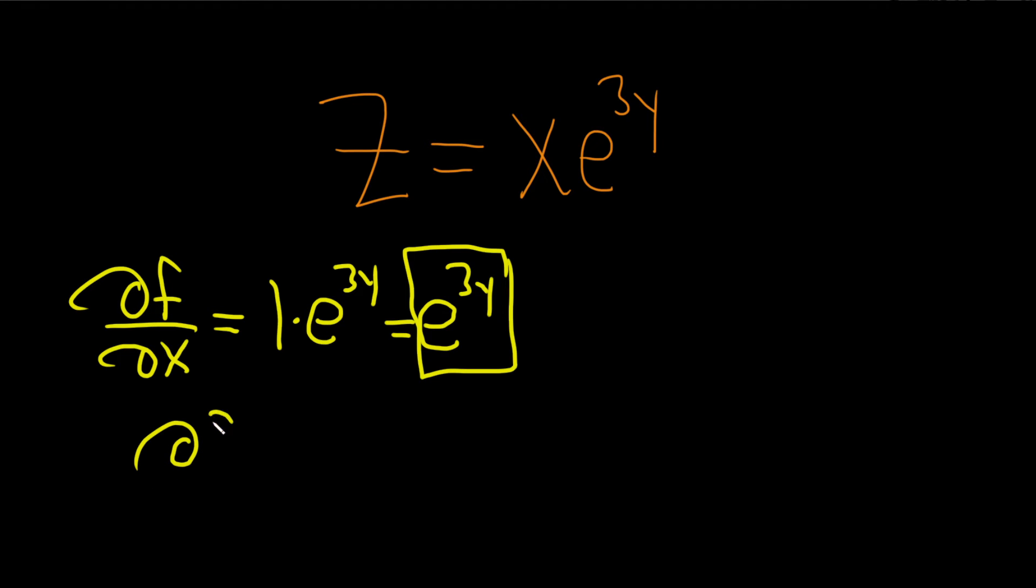Let's compute the partial with respect to y. So ∂f/∂y. So now we're taking the partial with respect to y. So the x is a constant. So we have an x here in front of this function of y.